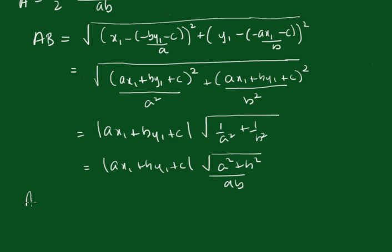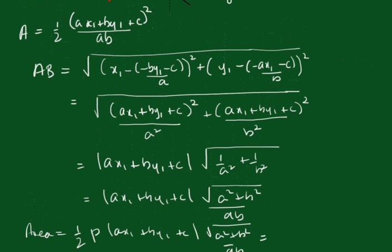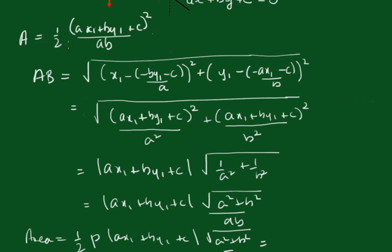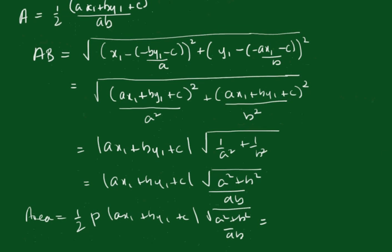So, the area is going to be a half p times ax1 plus by1 plus c, square root of a squared plus b squared on ab. But that is equal to what we had up here, this half ax1 plus by1 plus c all squared over ab.